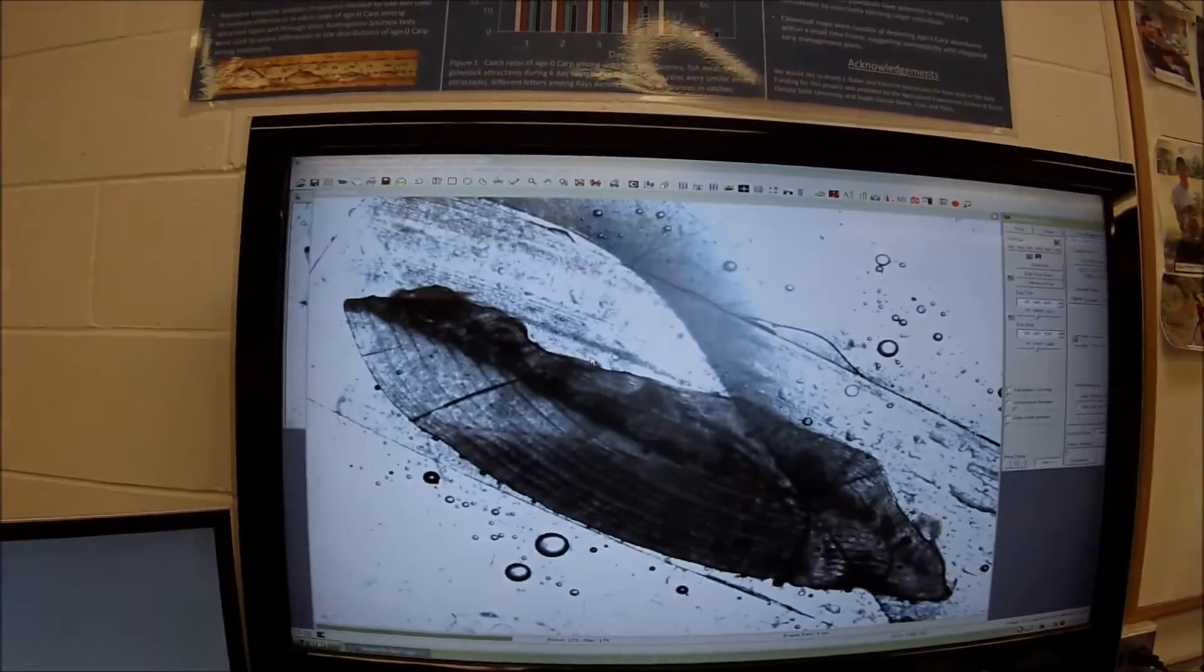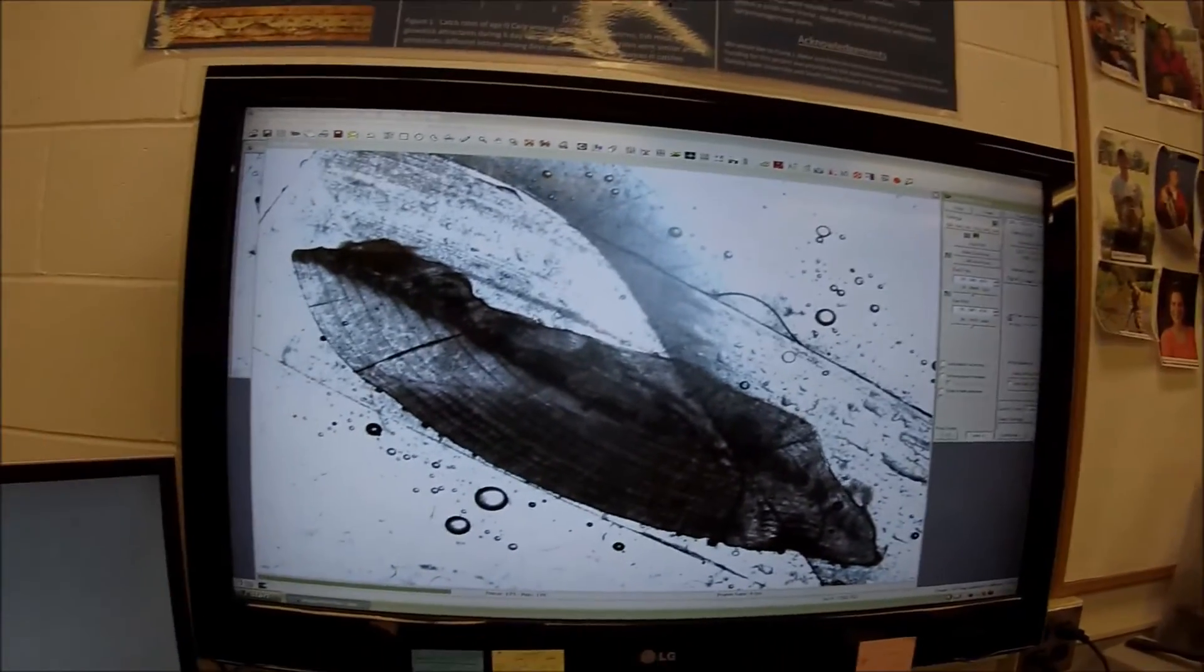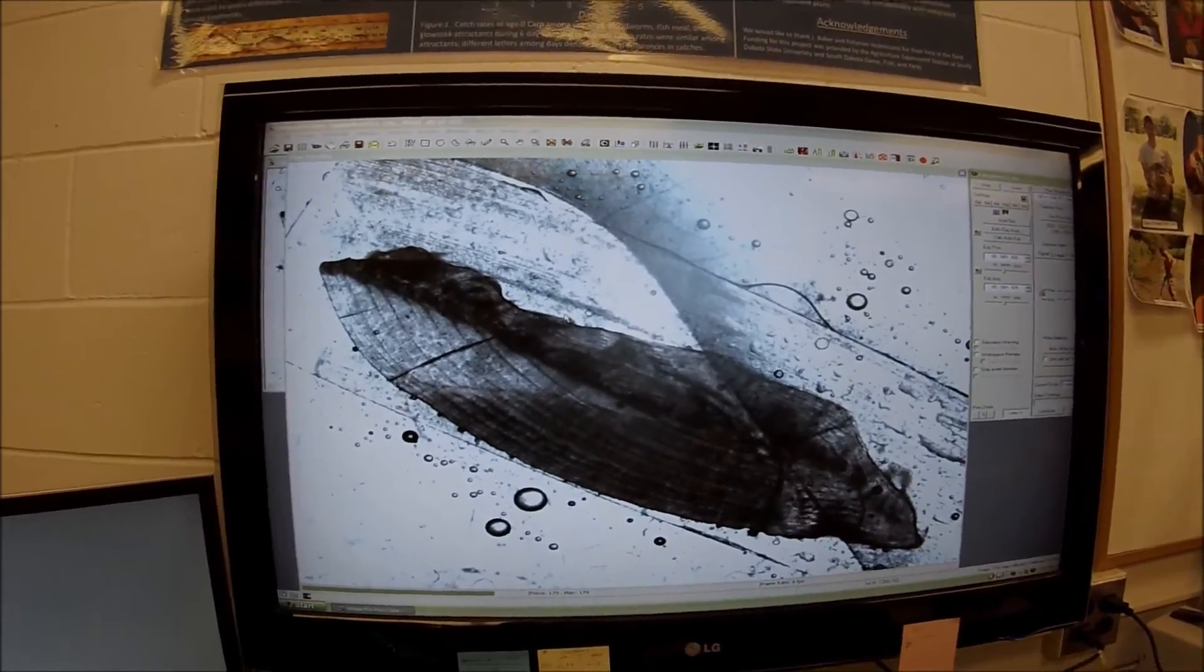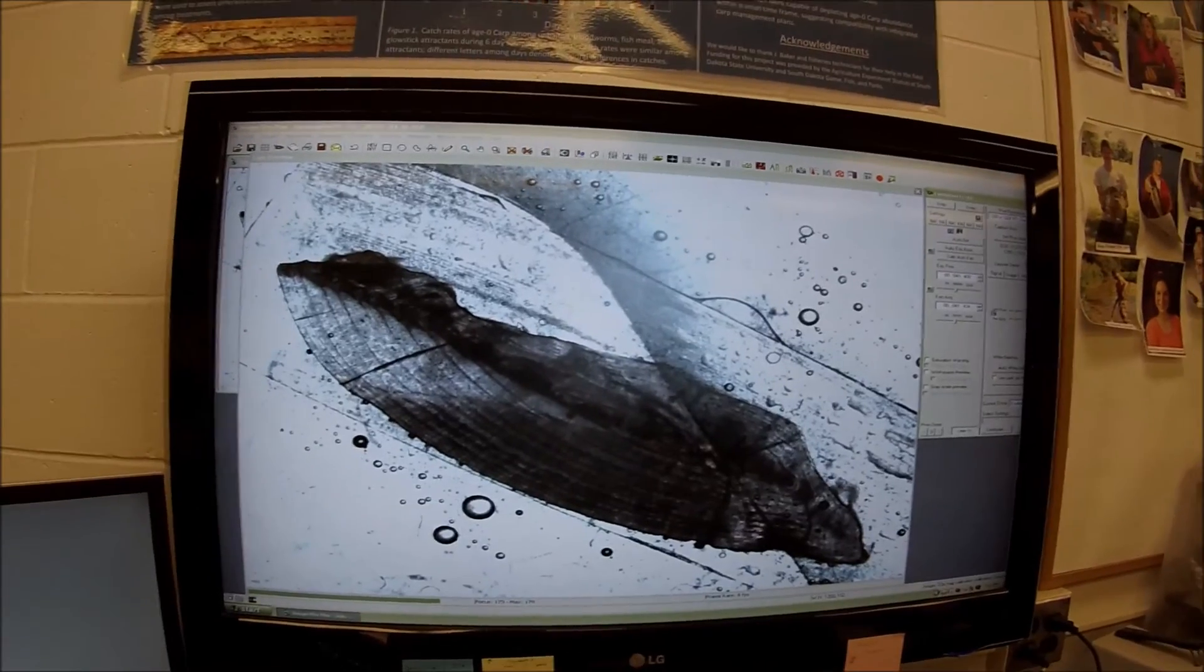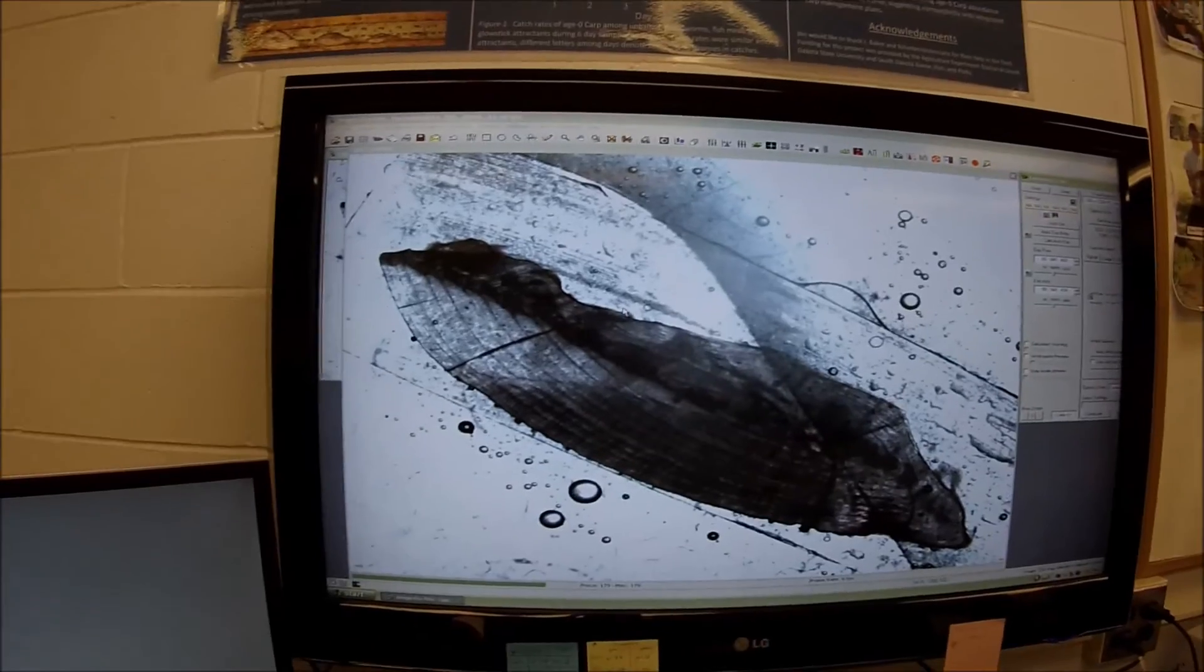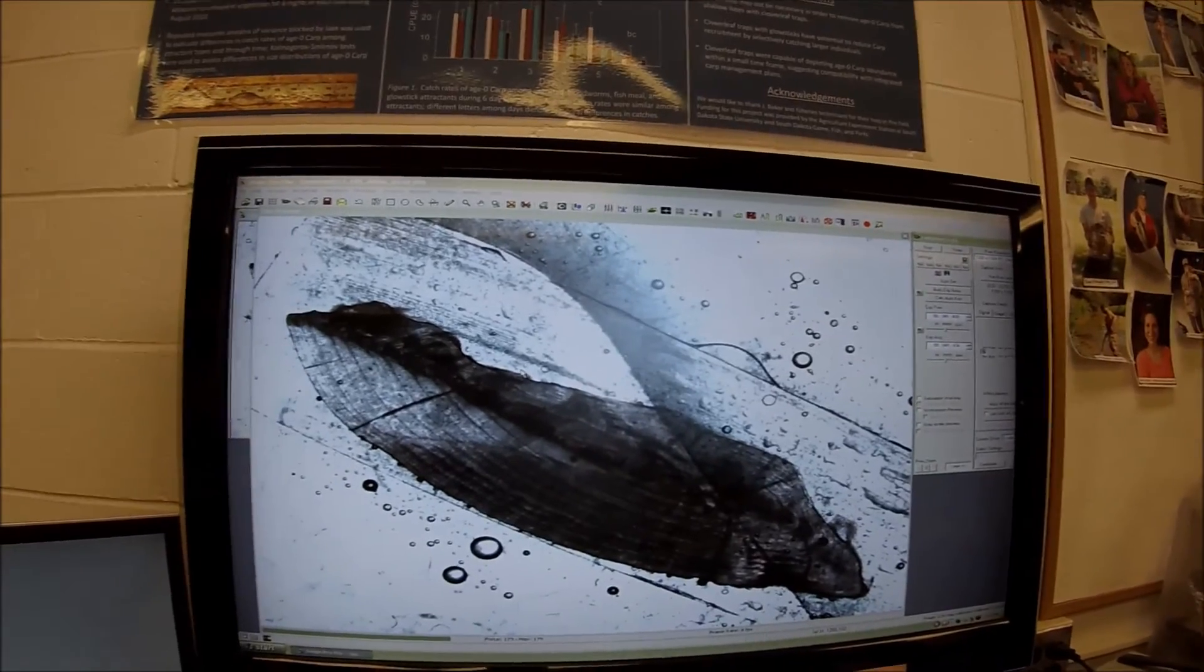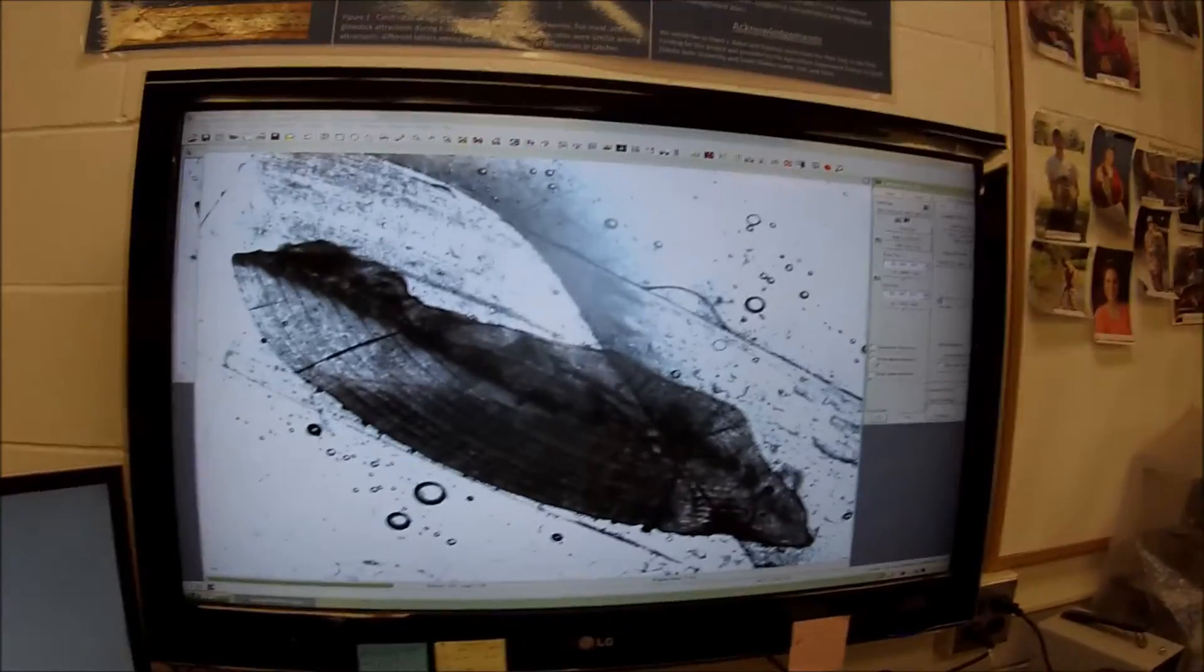And another great thing about this method is it can be used for almost every species of fish out there. It's, by and large, the most commonly accepted form of aging. Scales are almost obsolete now. There's lots of data out there that suggests that scales really misrepresent the true age of fishes, particularly of older fishes. So this method is really the preferred way to age fish and it's very accurate. And yeah, it's a lot of fun. Well, there you have it, folks. Now you know how to age fish.